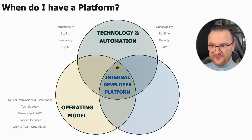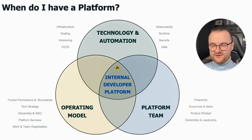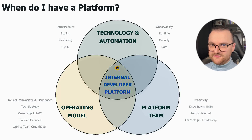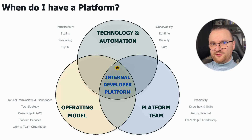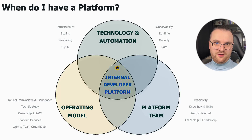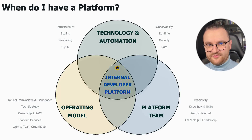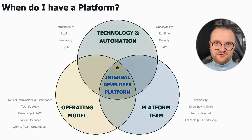We also need a platform team — one single entity responsible for both toolset operations and service fulfillment. So we have three pillars: Technology, meaning the tools to build and manage the platform; Operating Model, defining the responsibility boundary between stream-aligned teams and the platform team; and the Platform Team itself — one team responsible for all of it.